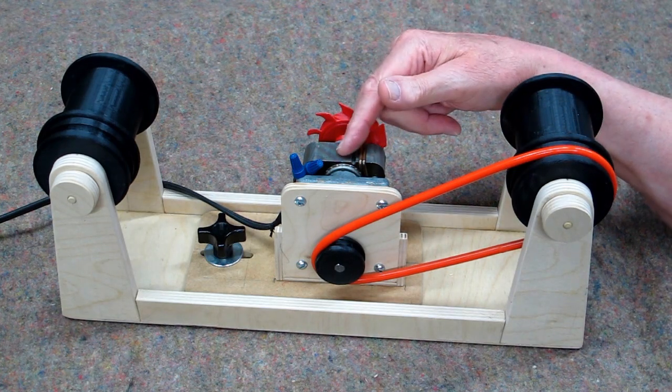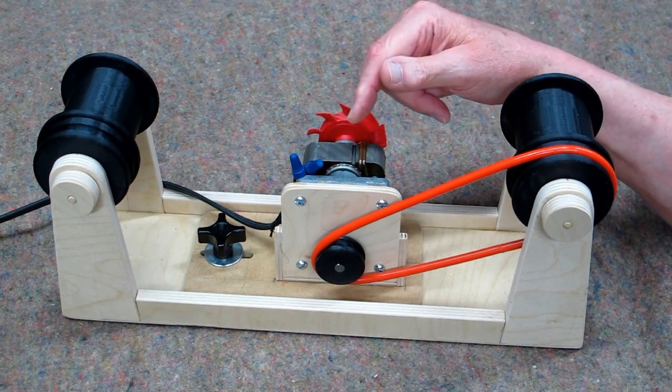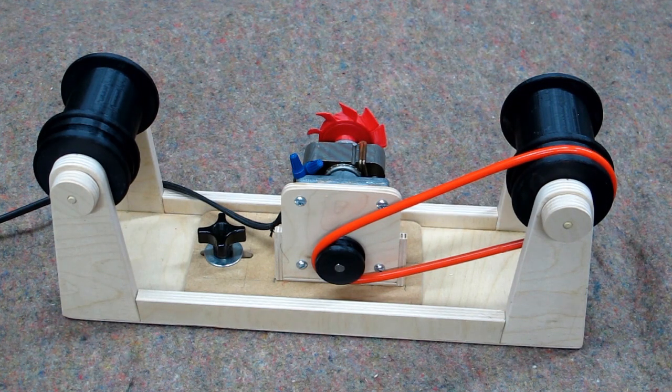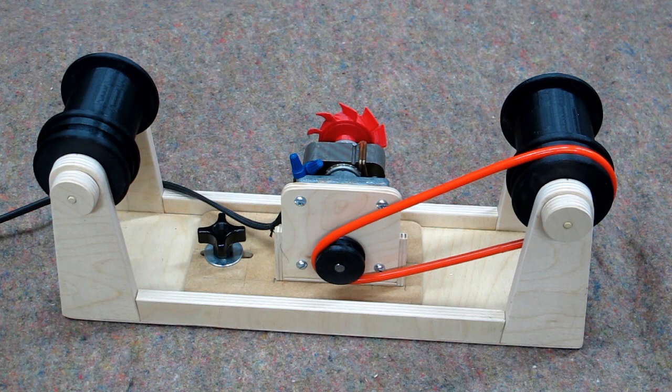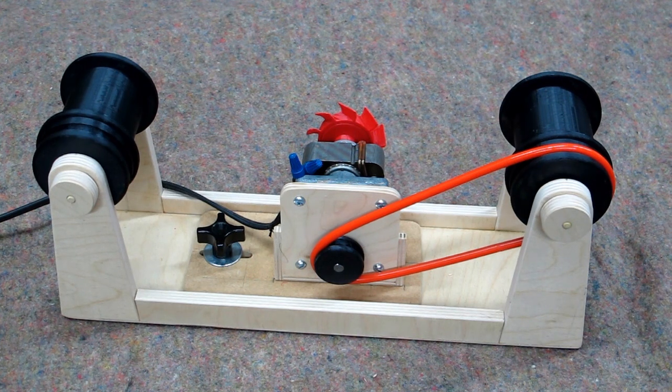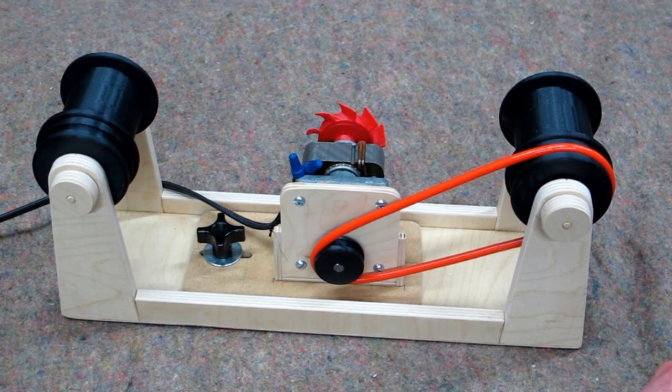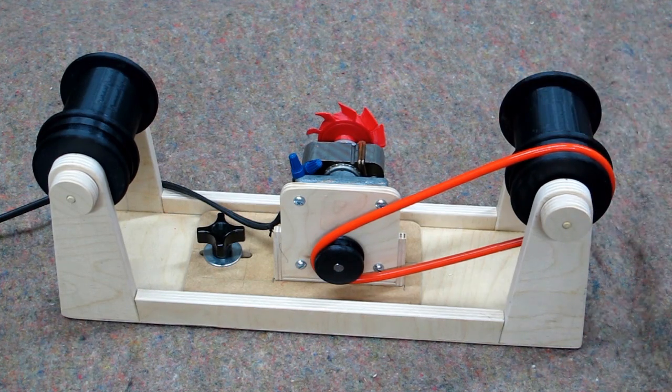You can buy a gear motor on eBay, made in China. They have all different combinations and speeds. You can run it on a 12 volt battery or on a power supply. If you've had a problem with filament where the filament is crossed over on the spool, you may find this very handy.